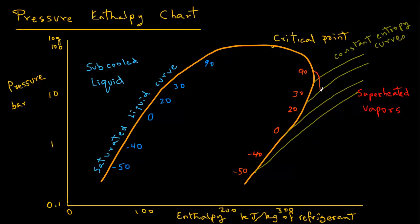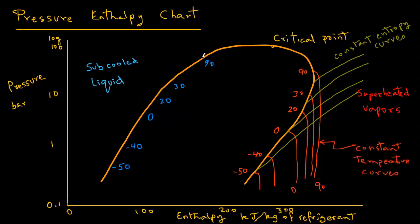Now from the temperature 90 we will drop a curve down. So any point on that curve represents a temperature of 90 degrees. And similarly we will drop temperature lines from 30, 20, 0, minus 40, and minus 50. So again these are the constant temperature curves. And they are in the superheated vapor region.